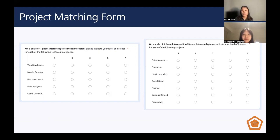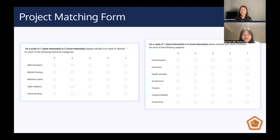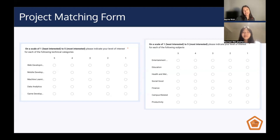For the technical categories, we have web development, mobile development, machine learning and data analytics, and game development. For the more general categories, because a technical category alone is not enough to come up with an idea, you also have to have some subject matter and some problem you're addressing. Those general categories are entertainment, education, health and wellness, social good, finance, campus-related, and productivity. All of those combined with your technical interests can make some really cool products.